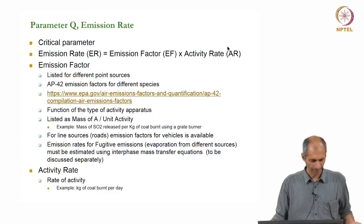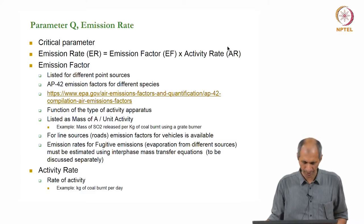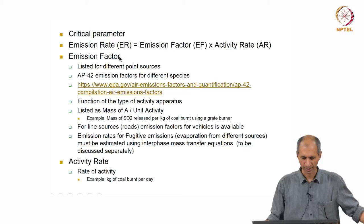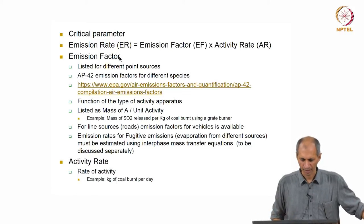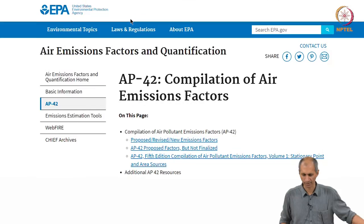In yesterday's class we were talking about dispersion modeling parameters. One of the parameters is the emission rate, which is a combination of emission factor and activity rate. The emission factor is something that needs to be determined for every pollutant and every process.